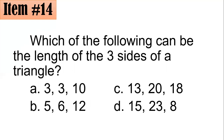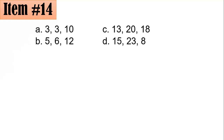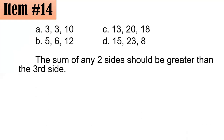Number 14. Which of the following can be the lengths of the sides of a triangle? Is it (A) 3, 3, 10; (B) 5, 6, 12; (C) 13, 20, 18; or (D) 15, 23, 8? I hope you could still recall the triangle inequality: in any triangle in the Euclidean plane, the sum of any two sides should be greater than the third side. If the sum is less than or equal, then it cannot form a triangle.